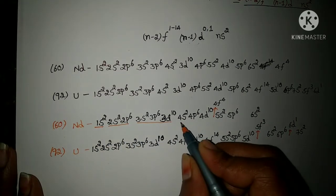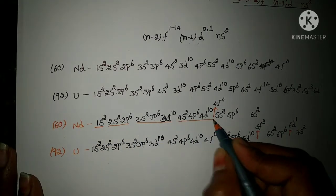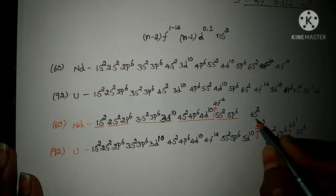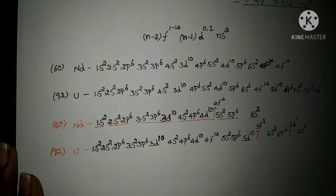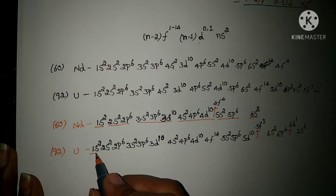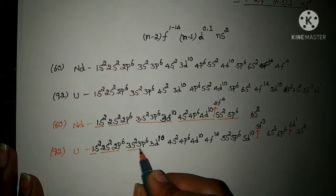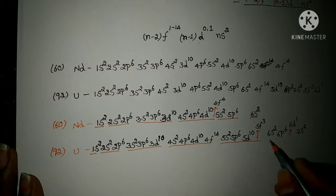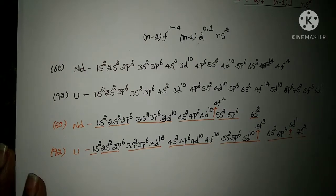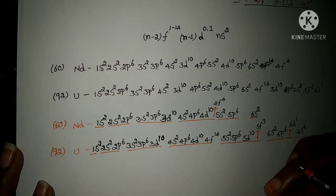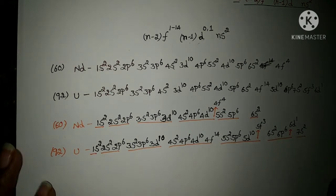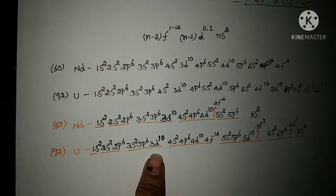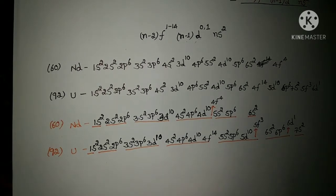I have written the electronic configurations according to shell-wise: first shell, second shell, third shell, fourth shell, fifth shell, sixth shell. This is written according to increasing order of the shell, not according to increasing order of energy.